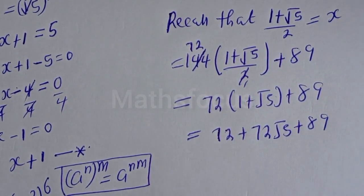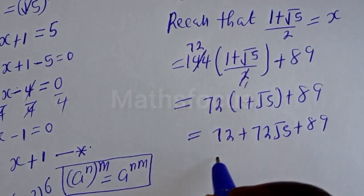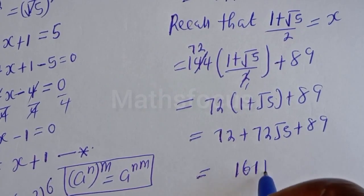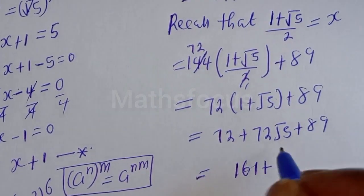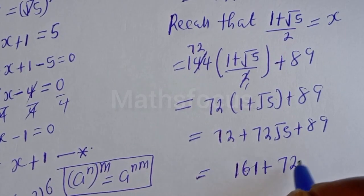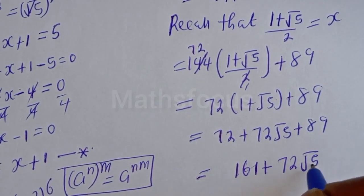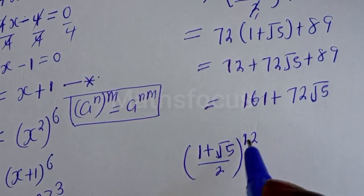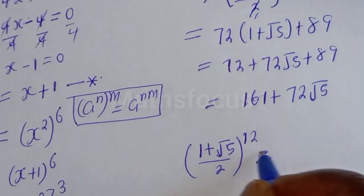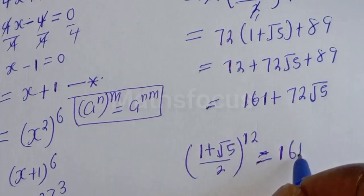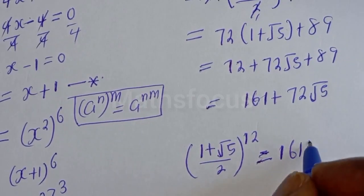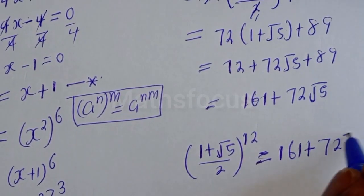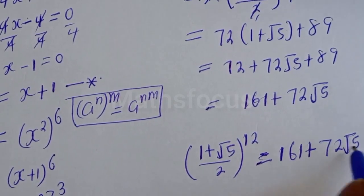Then 72 plus 89 is equal to 161 plus 72 root of 5. Therefore, 1 plus square root of 5 over 2, to the power of 12, is equal to 161 plus 72 root 5.